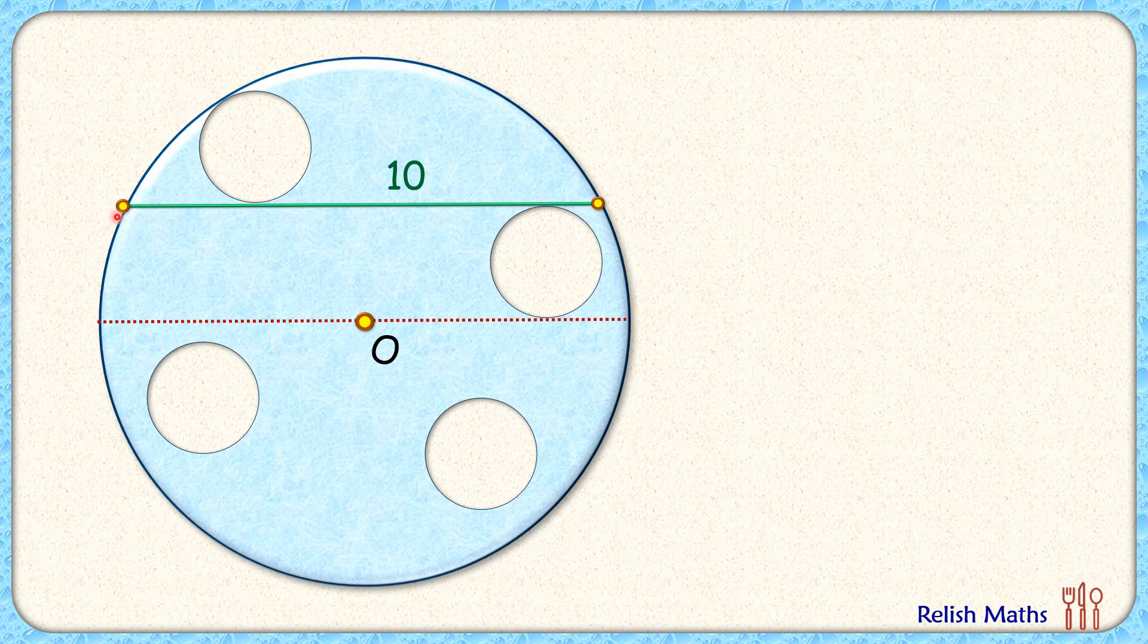Now to solve it, let's draw a perpendicular bisector for this green chord, and by theorem the perpendicular bisector of a chord passes through the center of the circle. Now as it's a perpendicular bisector, this length AB here will be half of 10 or 5 cm.